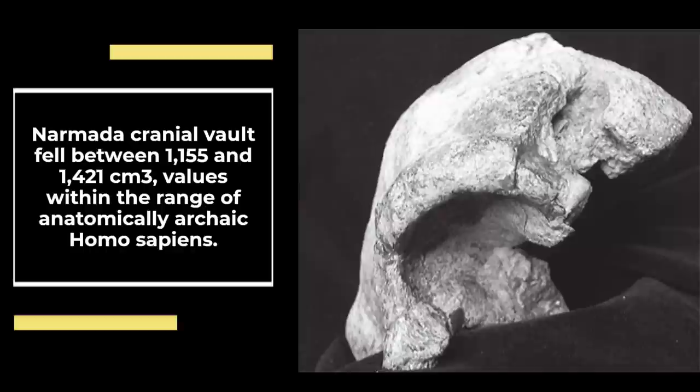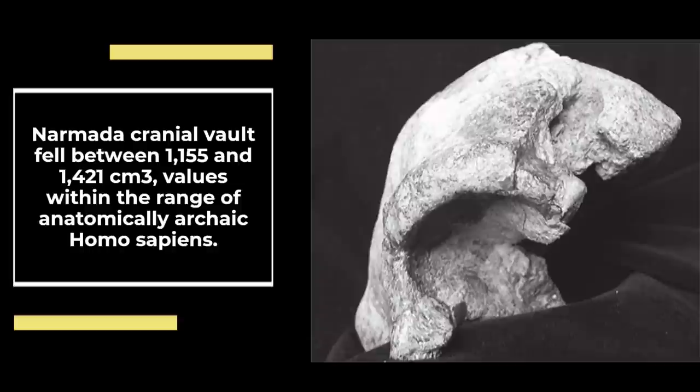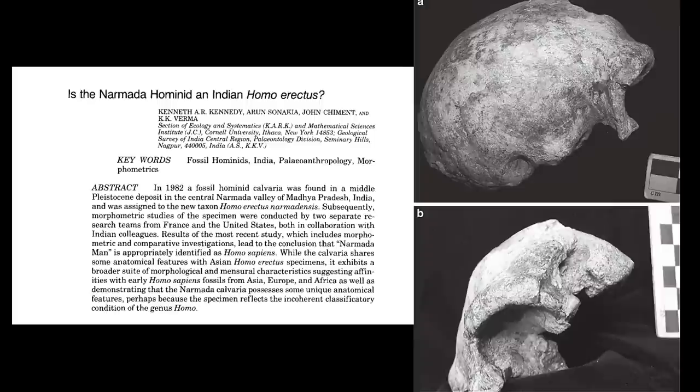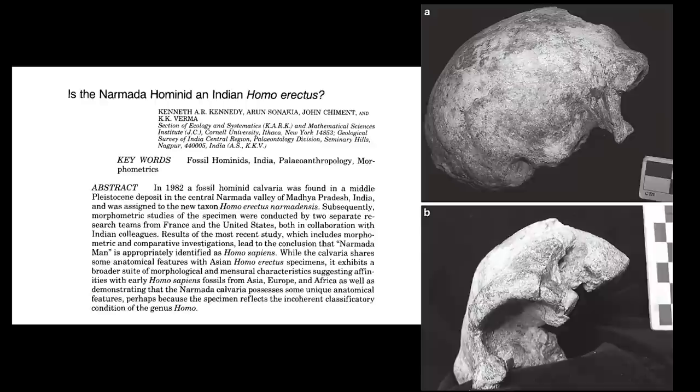Homo sapiens traits include a large cranial capacity of around 1,155 to 1,421 cubic centimeters, compared to smaller-brained Homo erectus, which averages 1,000 cubic centimeters. The fossil could be of a female individual aged between 25 and 30 years, which is important because females have a smaller average brain case, about 10% smaller than males.